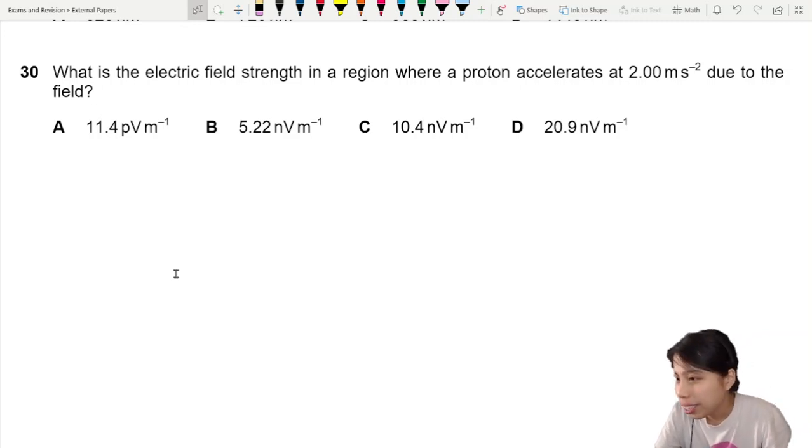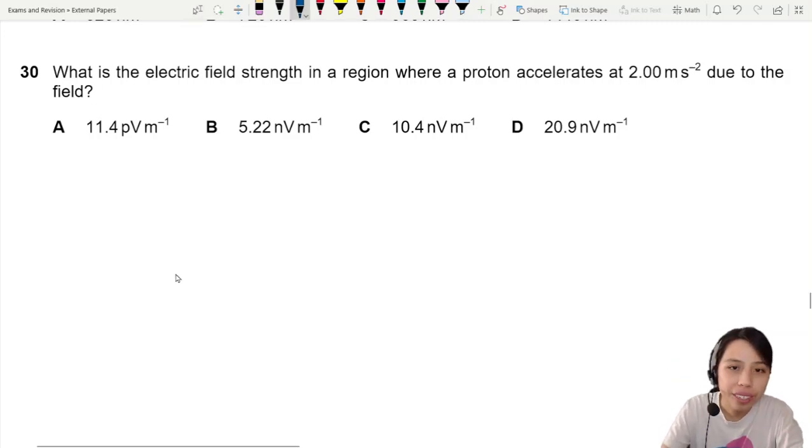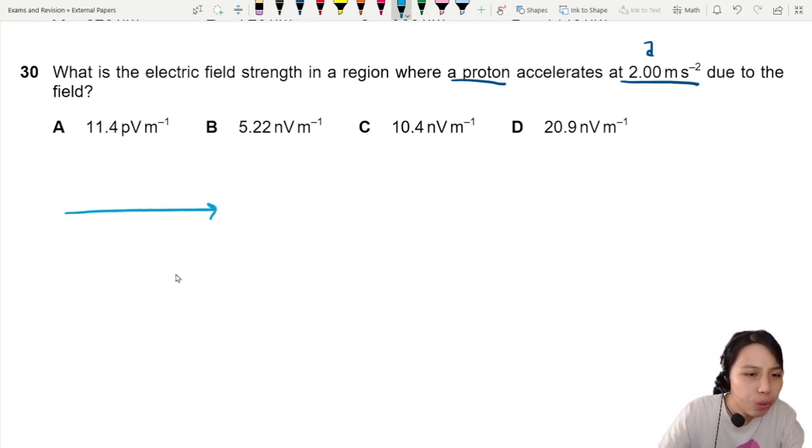What is the electric field strength in a region where a proton accelerates at 2 meters per second squared due to the field? What's happening here? Why is there so little information?